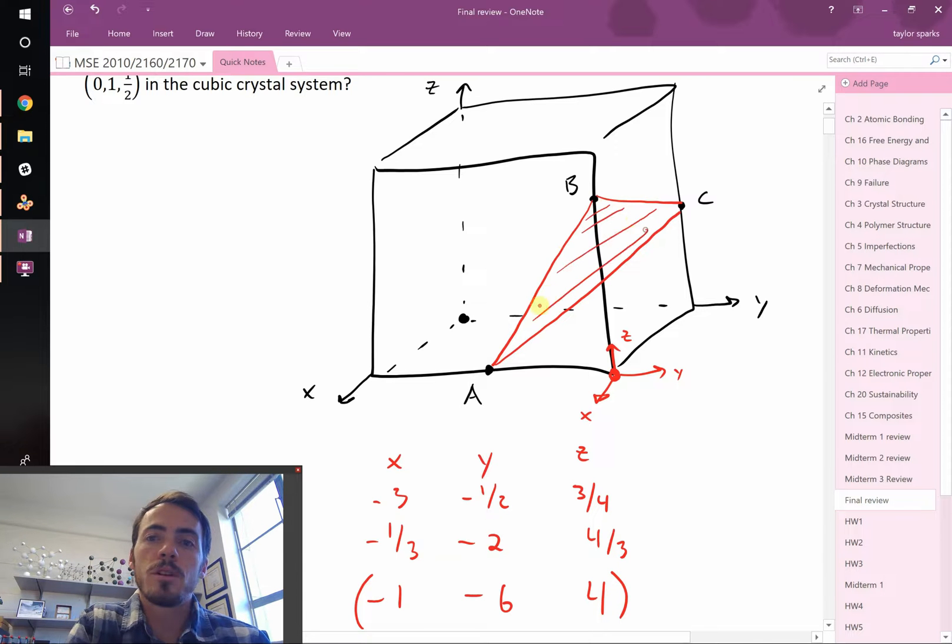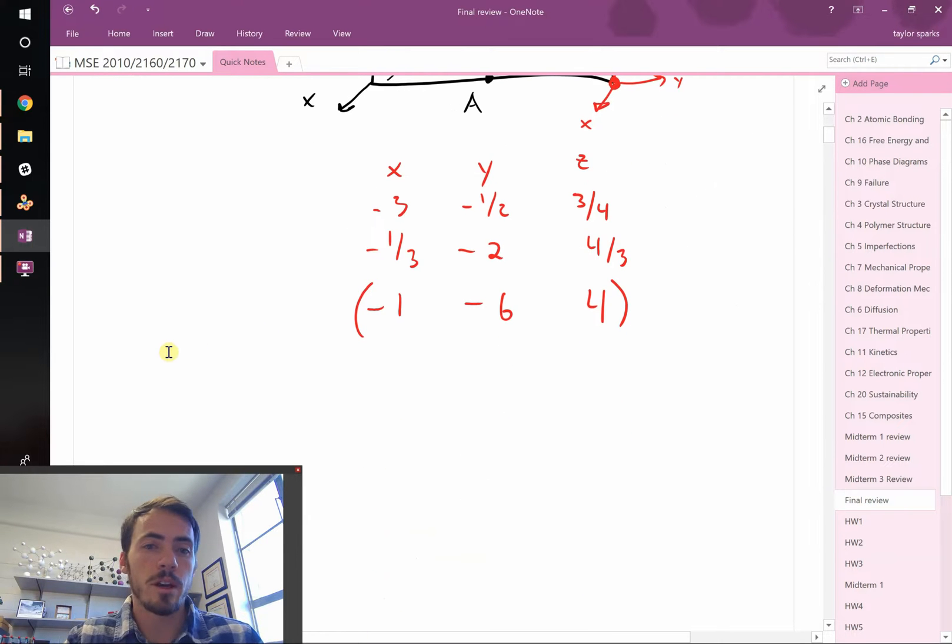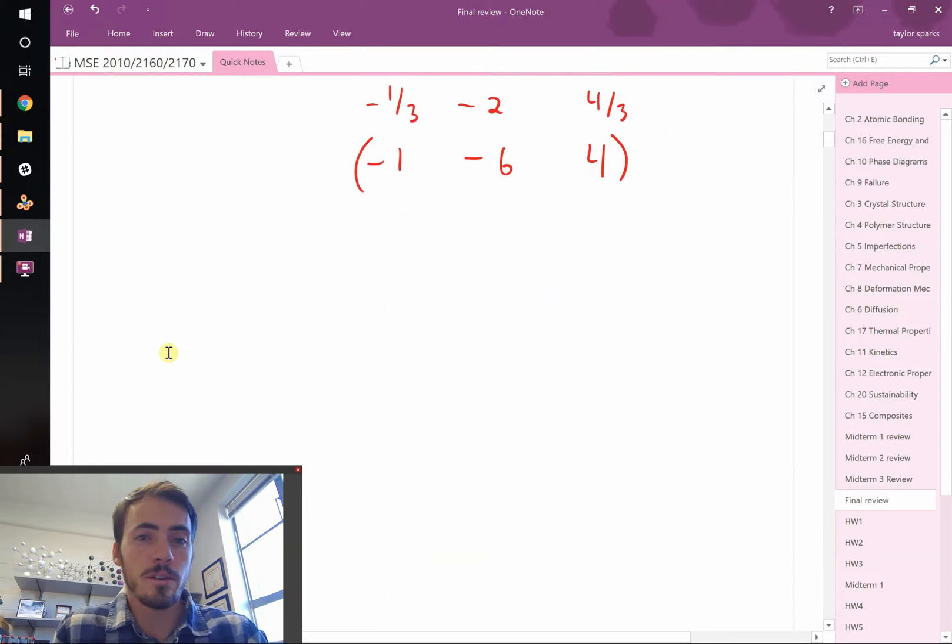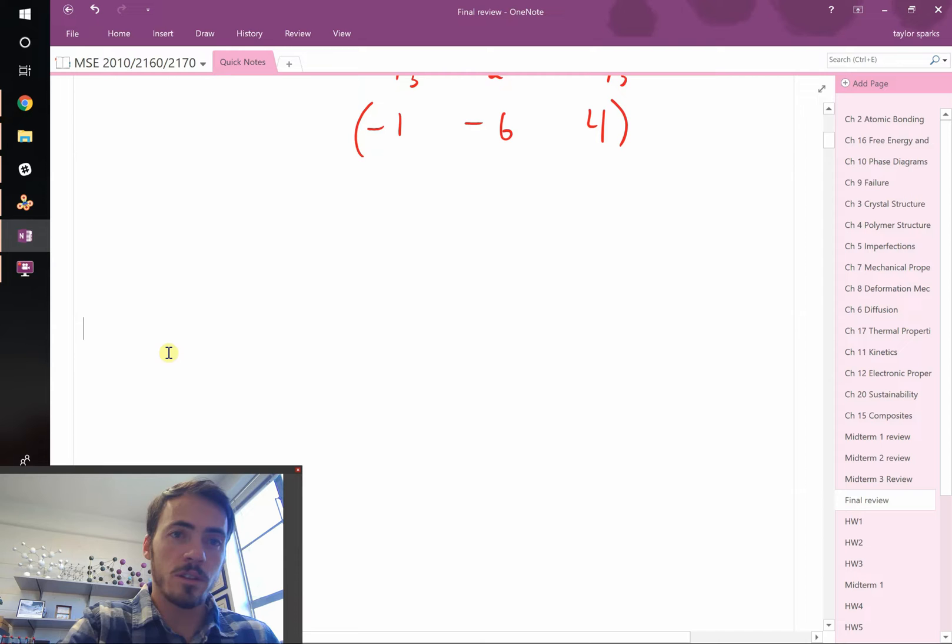That was a little bit tricky to label those, and some planes might be even harder. It might not be super easy to figure out where it's going to intersect the x, y, and z axes, even if you move your origin. Good news is there's another way to do this. It's called vector algebra, and you've probably seen it before if you've taken material science and engineering.